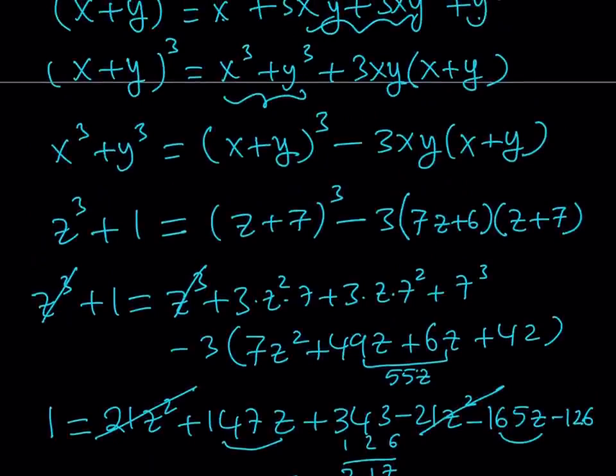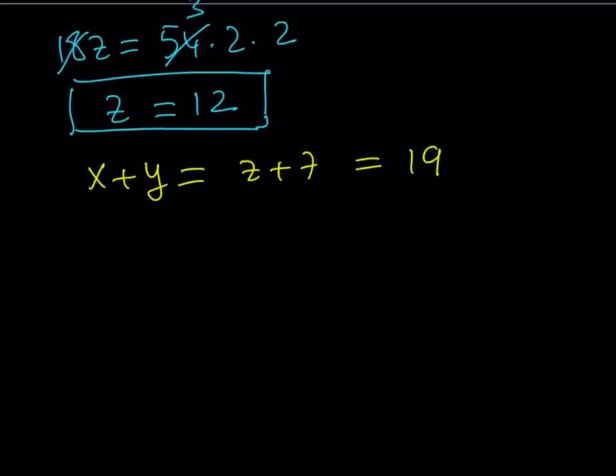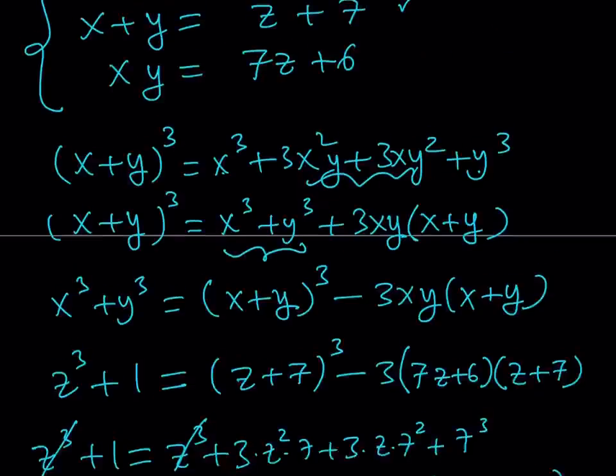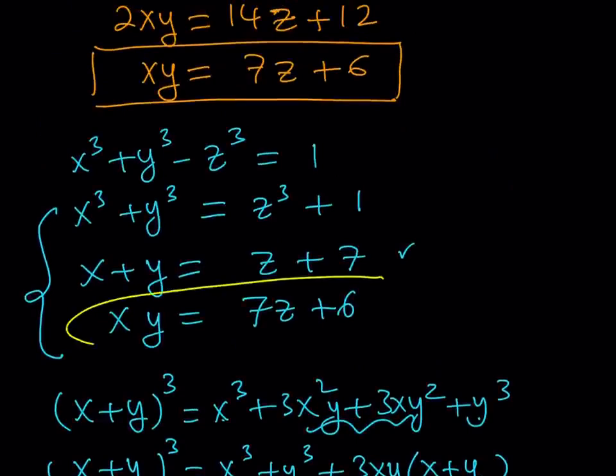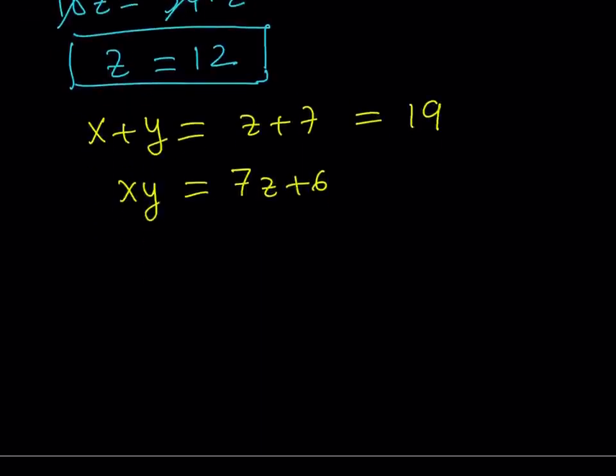And xy was also given in terms of z, which was 7z plus 6. So, we got xy in terms of z. Let's go ahead and use this as well. If z is equal to 12, 7 times 12 is equal to 84. 84 plus 6 is equal to 90. So, we're kind of looking for two numbers whose product is 90 and whose sum is 19.